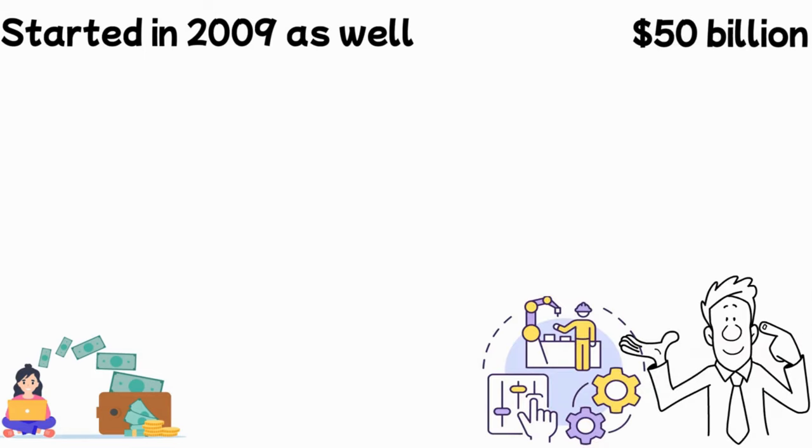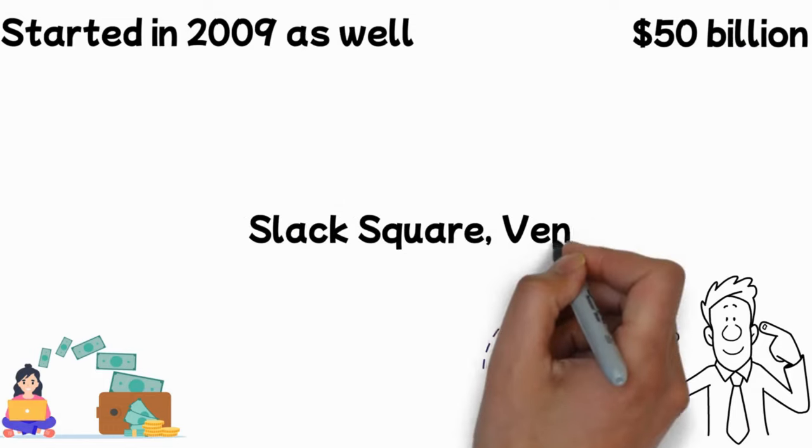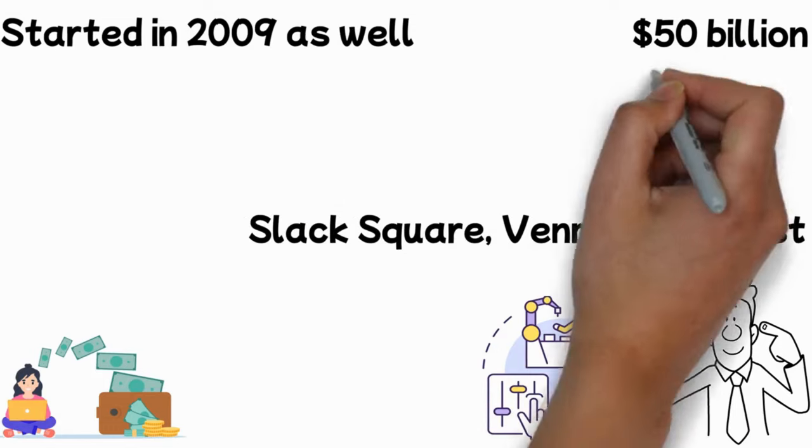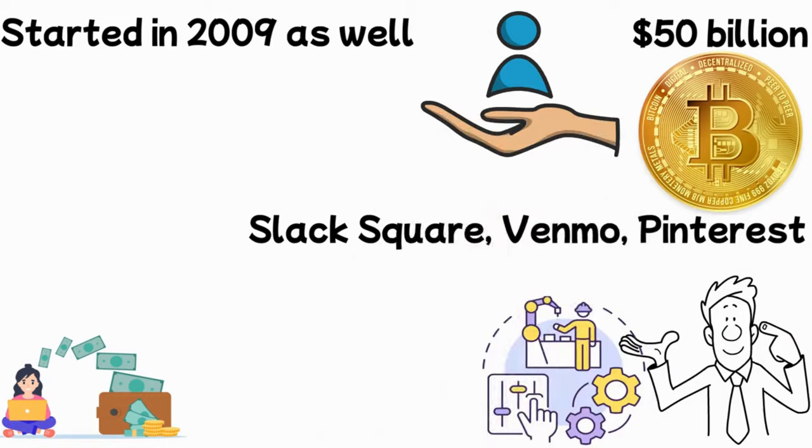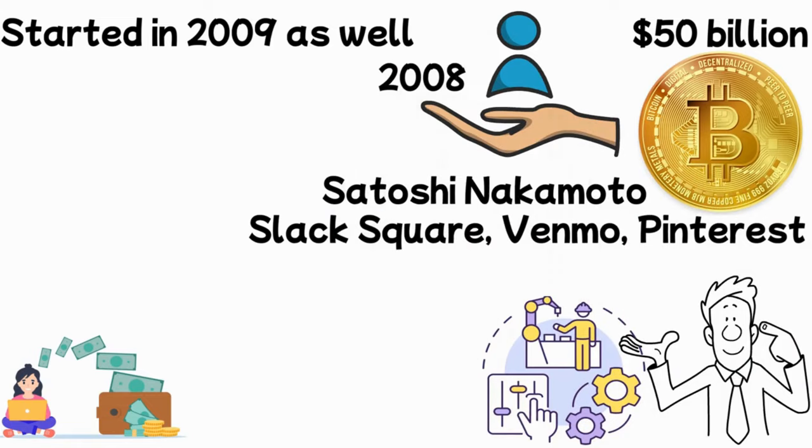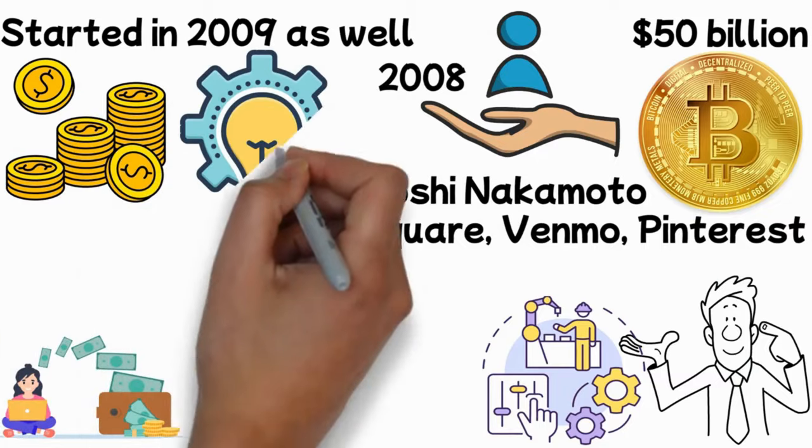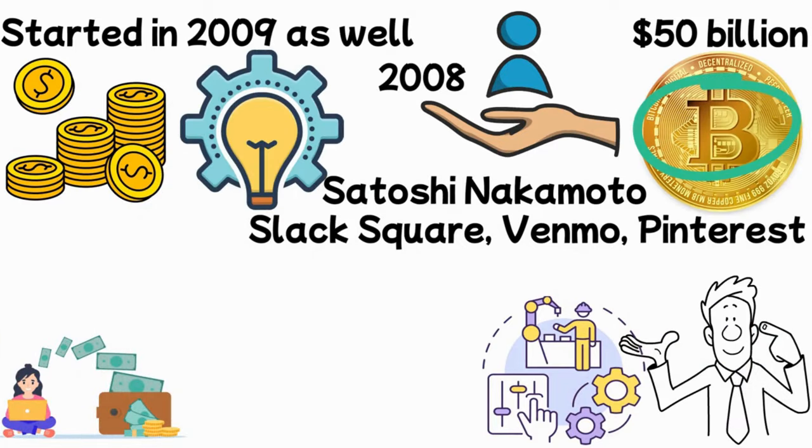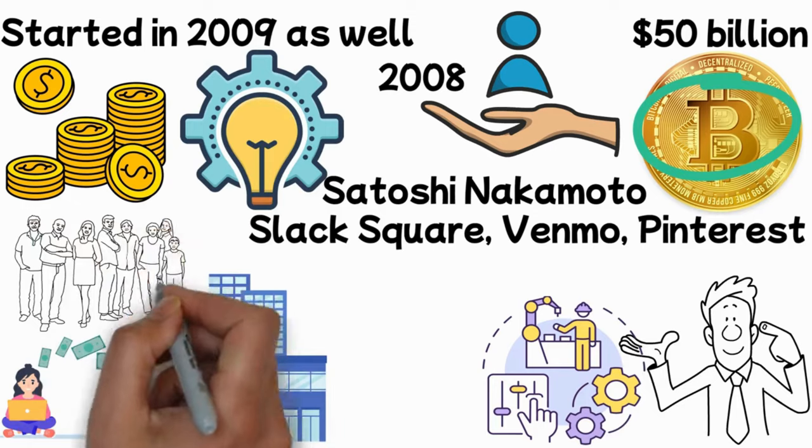Numerous other instances exist, such as Slack, Square, Venmo, Pinterest, and of course, Bitcoin. An individual by the name of Satoshi Nakamoto was inspired by the 2008 financial crisis to create Bitcoin, which launched a whole industry and made many people into millionaires and billionaires.